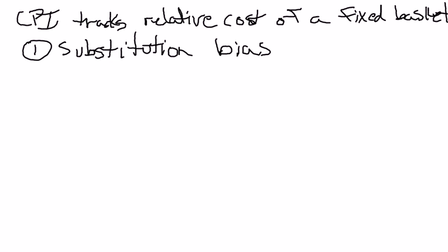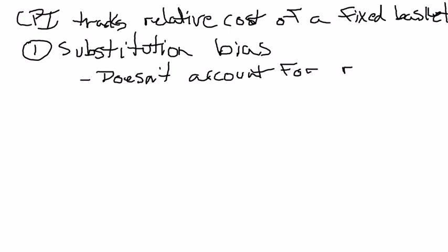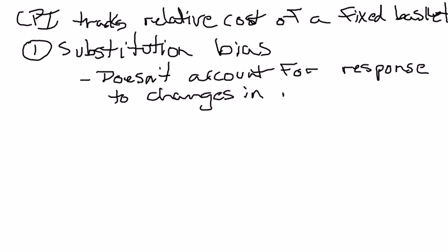So the first bias in the Consumer Price Index is that it doesn't take into account changes in the composition of the fixed basket — it doesn't account for the response of consumers to changing relative prices. Now, this used to be a much bigger deal than it is now, because the government would just keep the fixed basket of goods constant for either 5 or 10 years, but now they're updating it every 2 years or so, so it's much less of an issue, but it still exists.